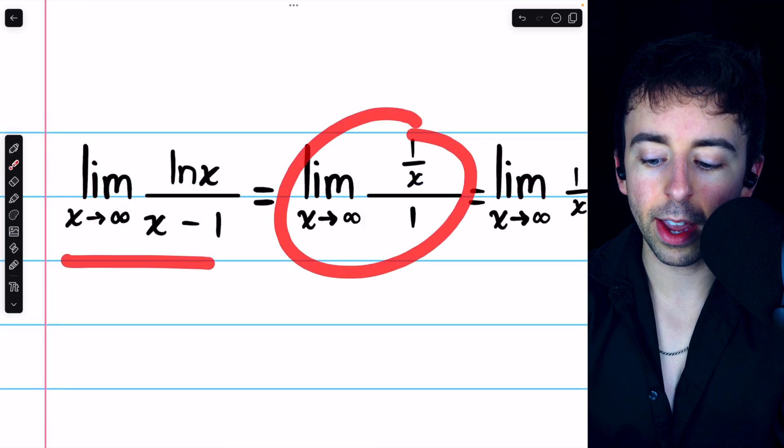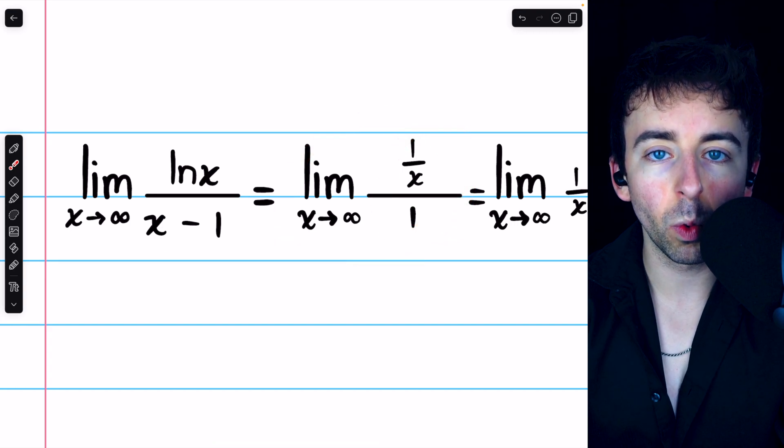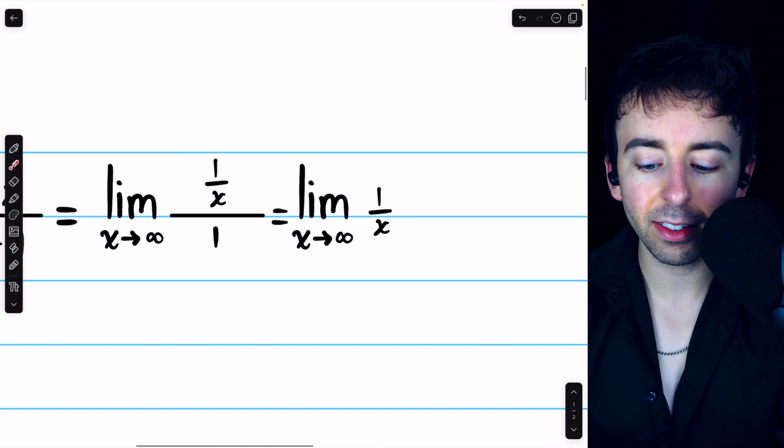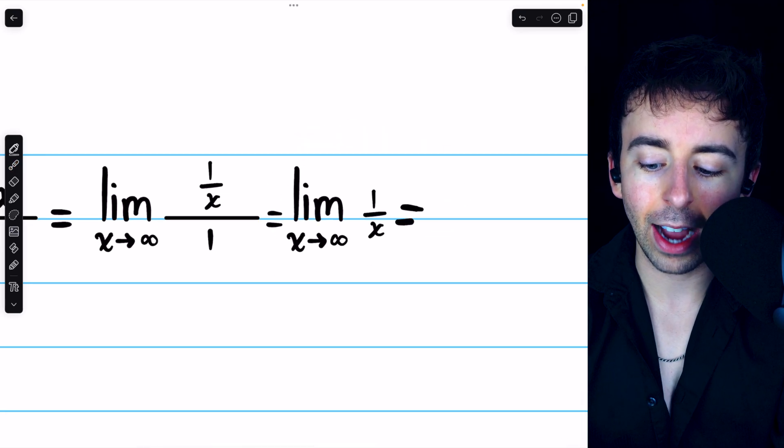Thus, this limit is equal to this, with 1 over x over 1. But 1 over x over 1 is the same as 1 over x, and so we arrive at this limit, the limit of 1 over x as x goes to infinity.